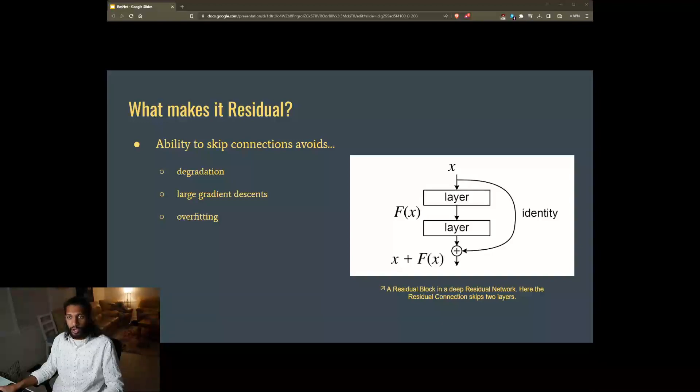Finally, the output of the convolutional layers is added to the original input. Mathematically, the output of the residual block can be represented as f(x) plus x, where f(x) represents the learned transformation from the convolutional layers.